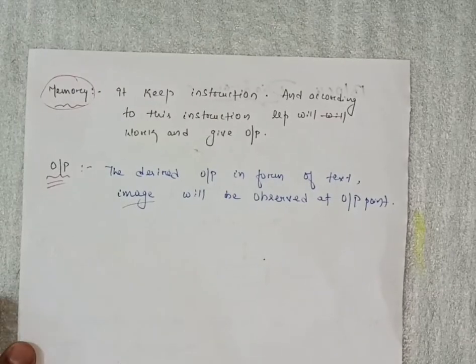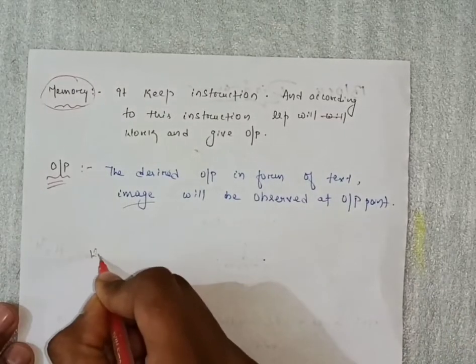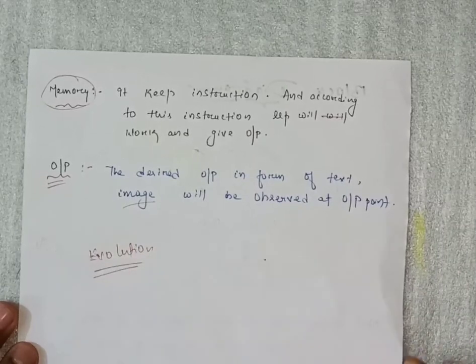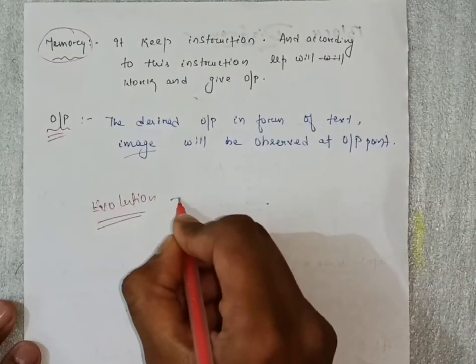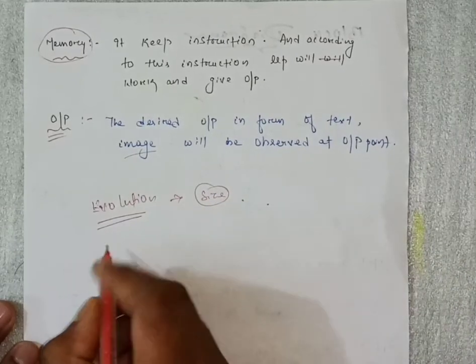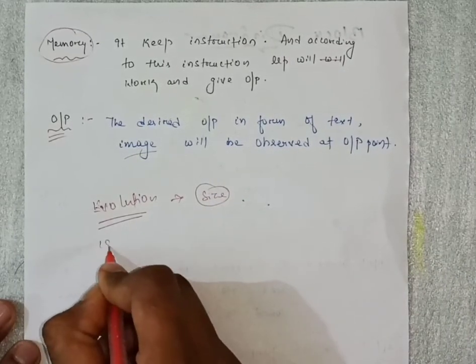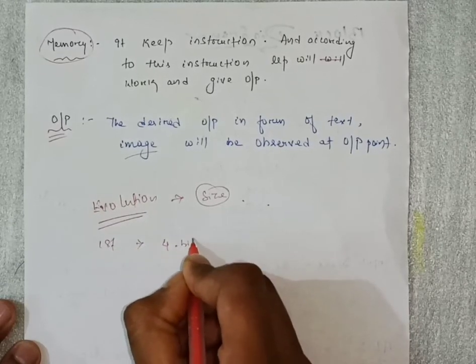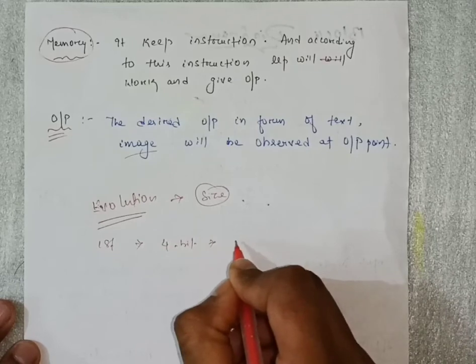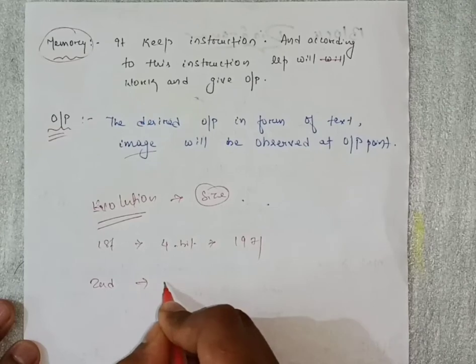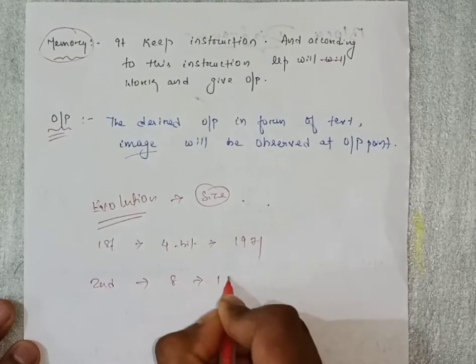Now coming to the evolution of microprocessor - that is how evolution is based on the size. The first generation of microprocessor was only 4-bit. It was developed in the year 1971. The second generation was of 8-bit, it was developed in 1973.